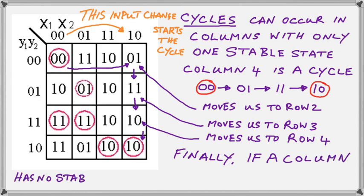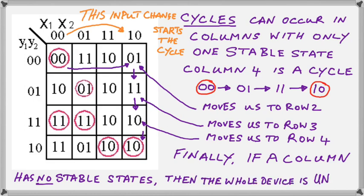Finally, if a column has no stable states at all, then the whole device is unstable, since it will, in fact, oscillate.